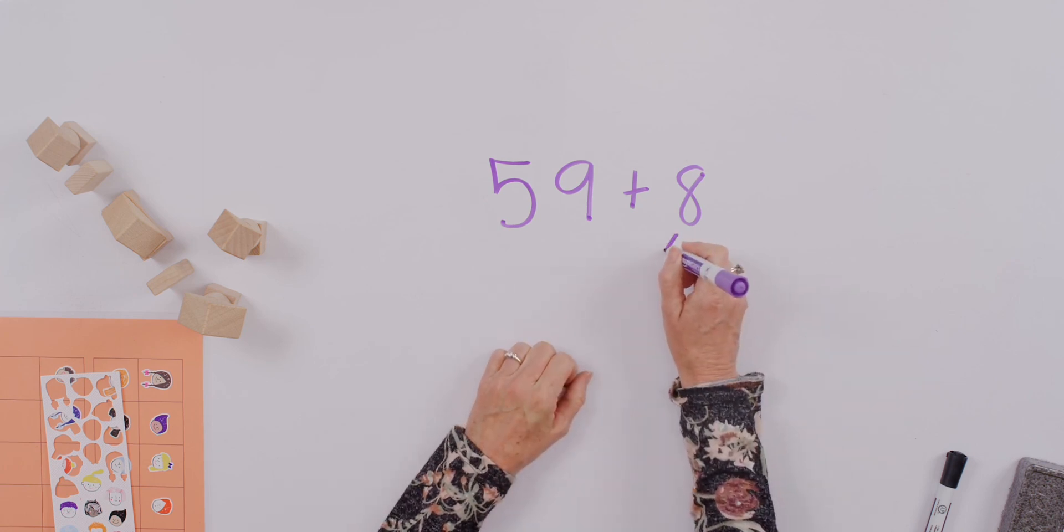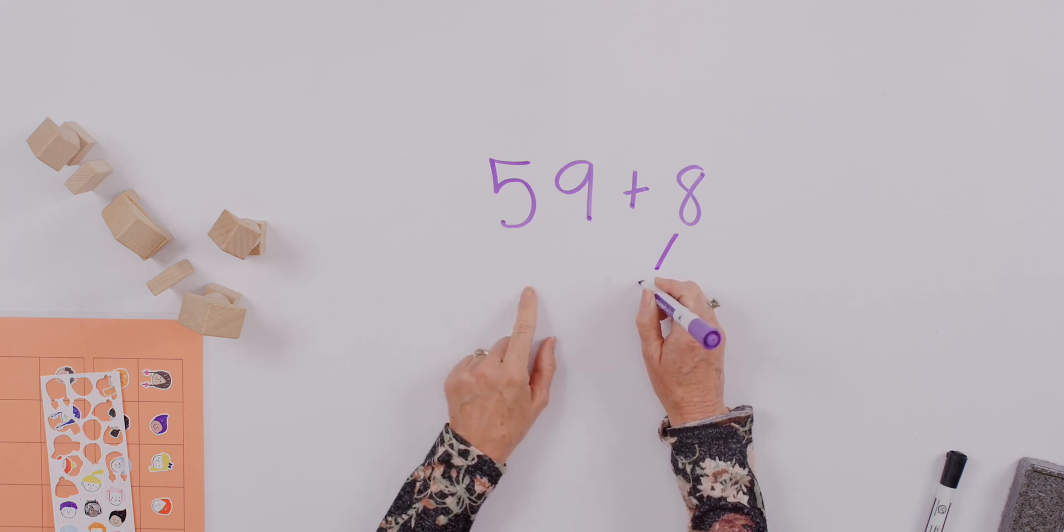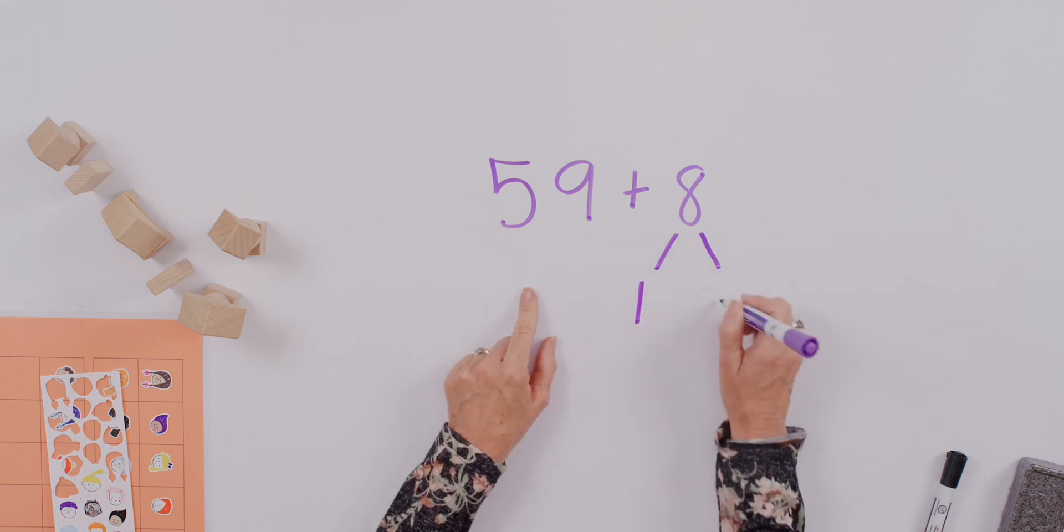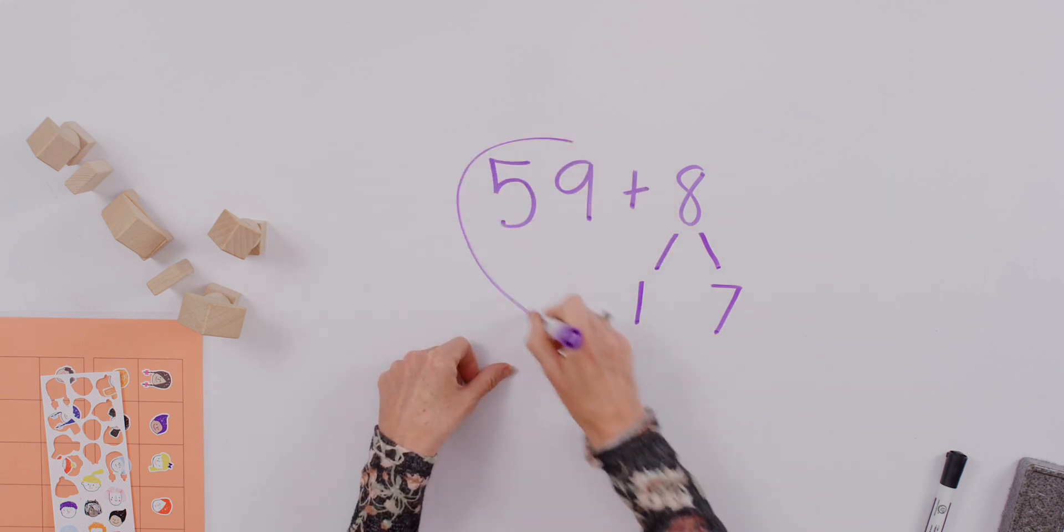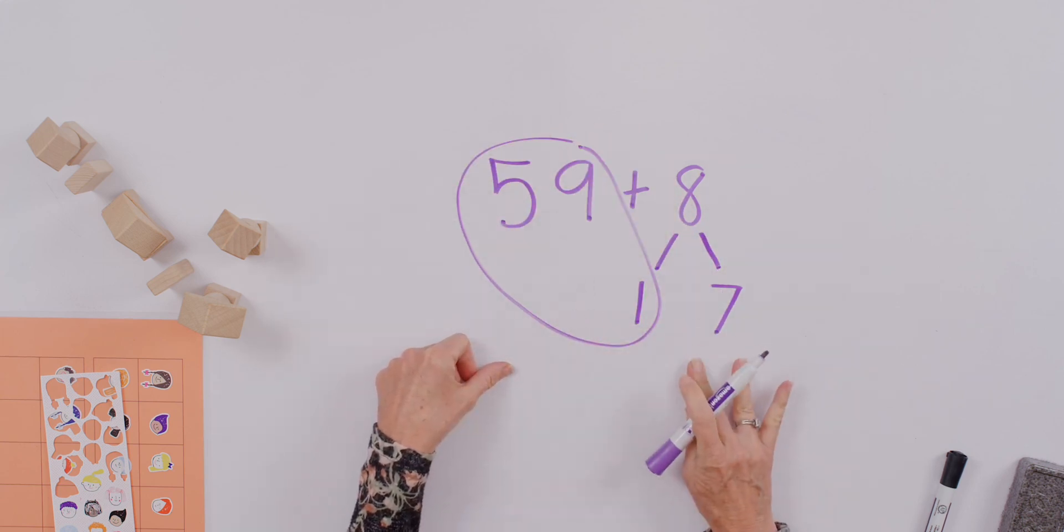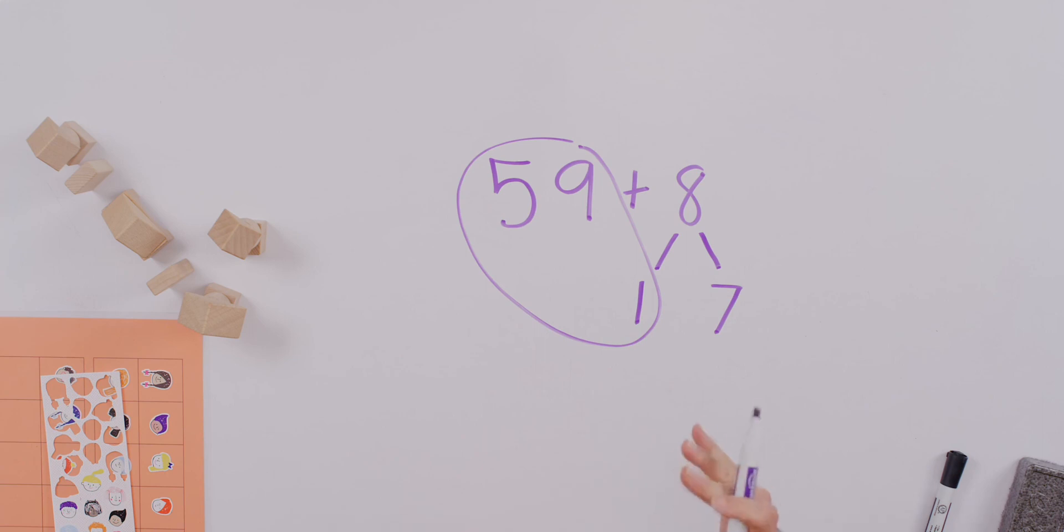So if I want to make the fifty-nine the friendly number of sixty, I can show it by making the number bond with one, seven, and eight. Now we have sixty-seven, and that's a pretty manageable way to work with those numbers.